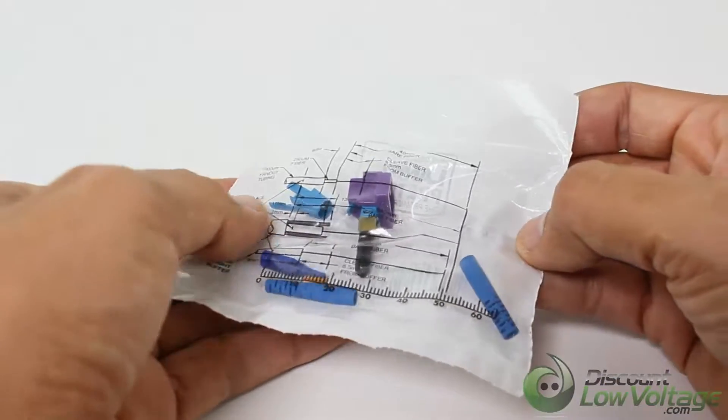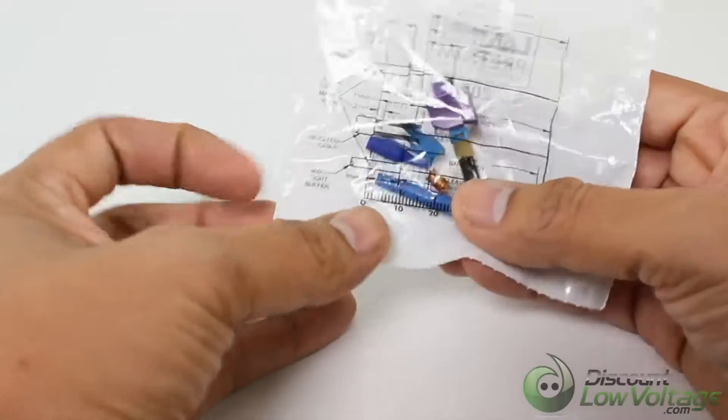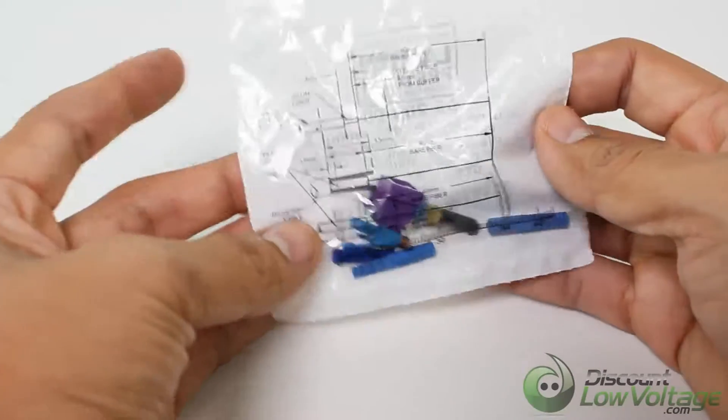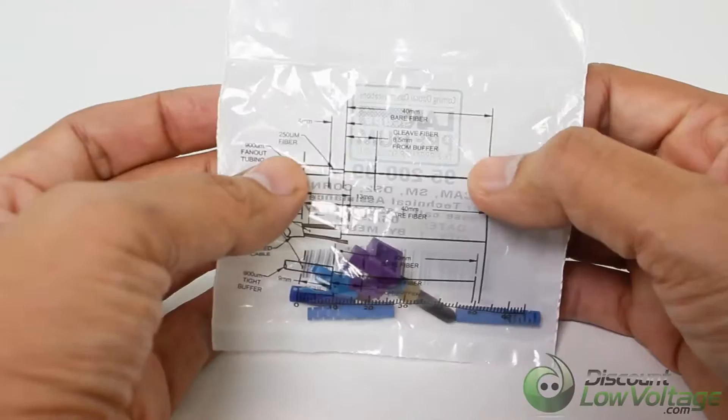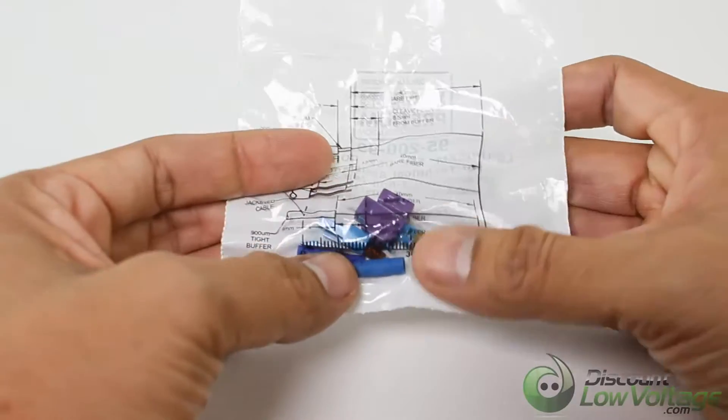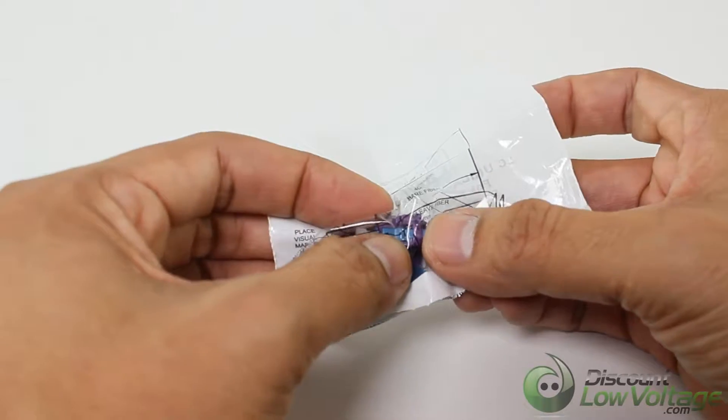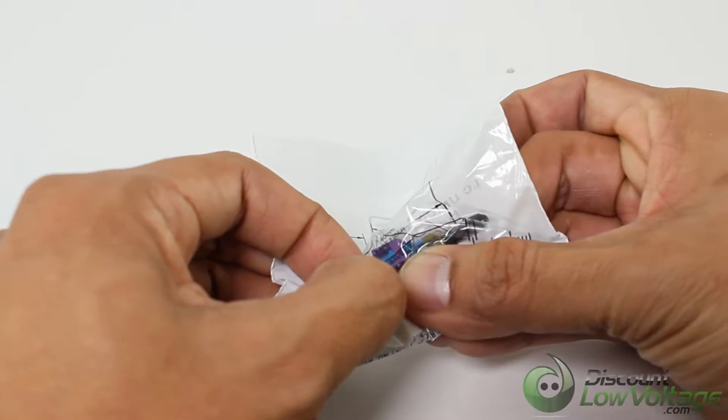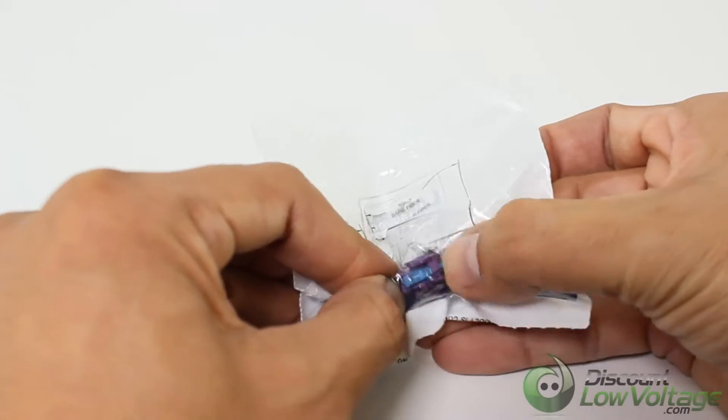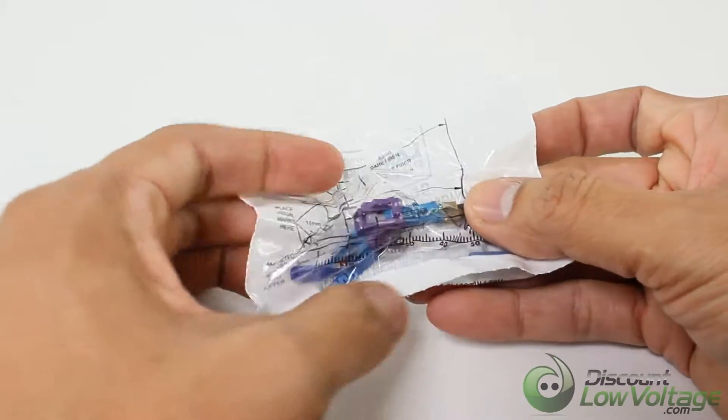Corning Cable Systems Unicam Standard Performance Connectors offer best-in-class optical performance in a fast, easy field termination solution ideal for fiber to the workstation application where setup and teardown time is critical. The high-precision mechanical splice technology enables fiber optic networks to be installed quickly and cost-effectively.